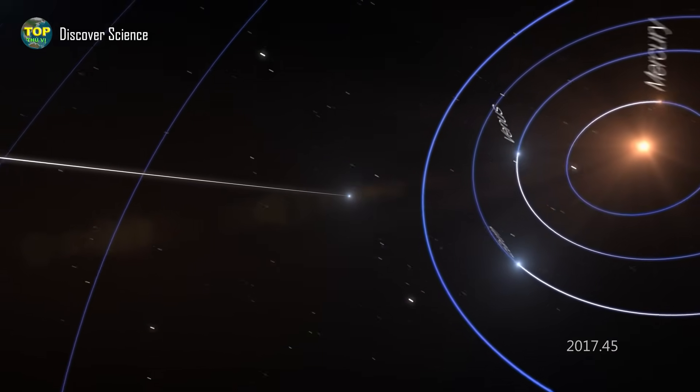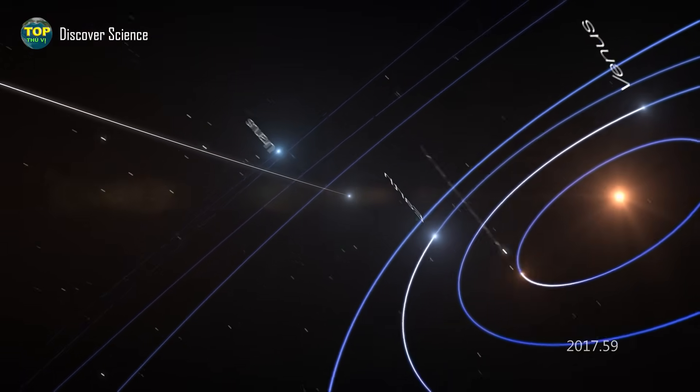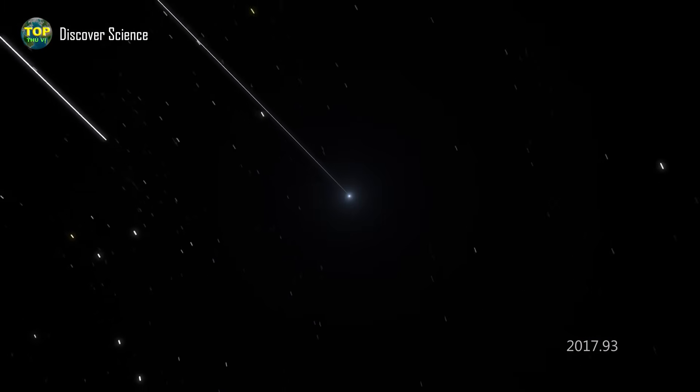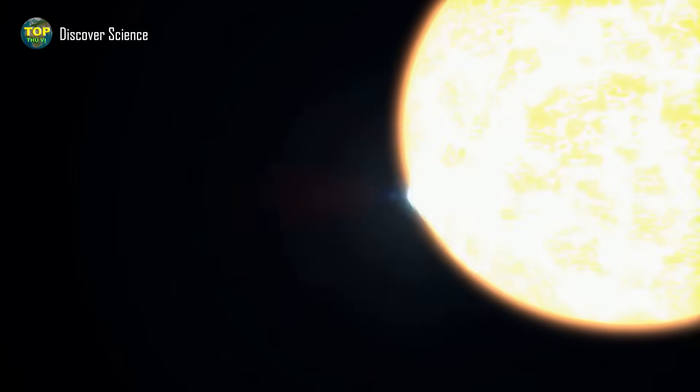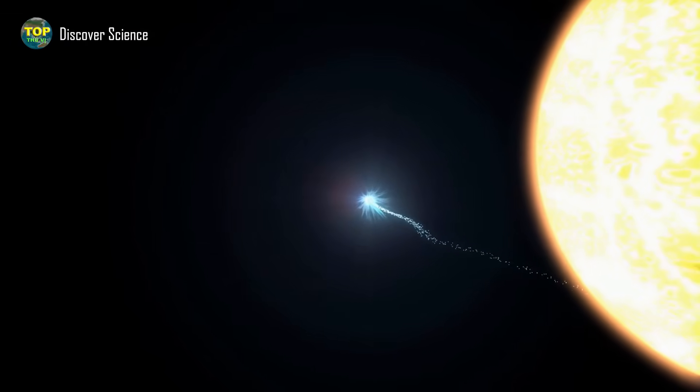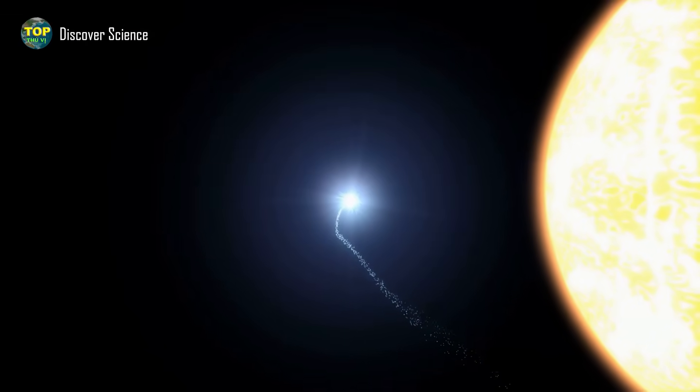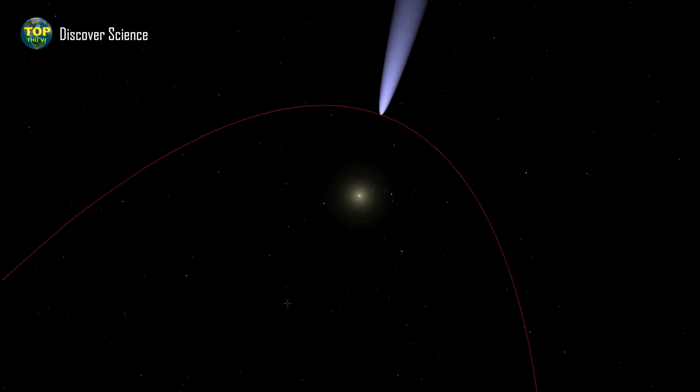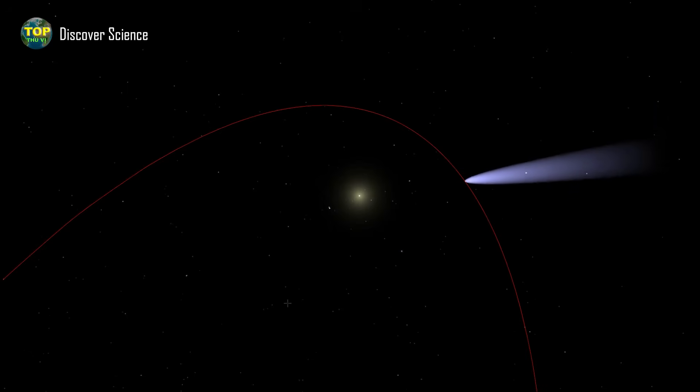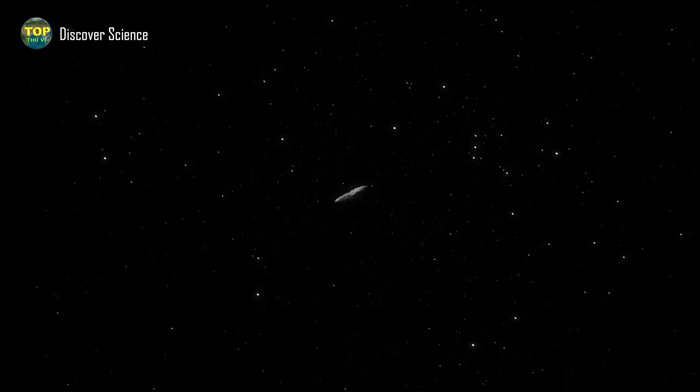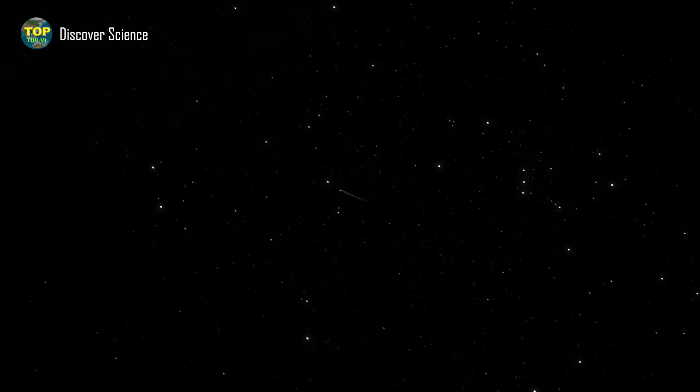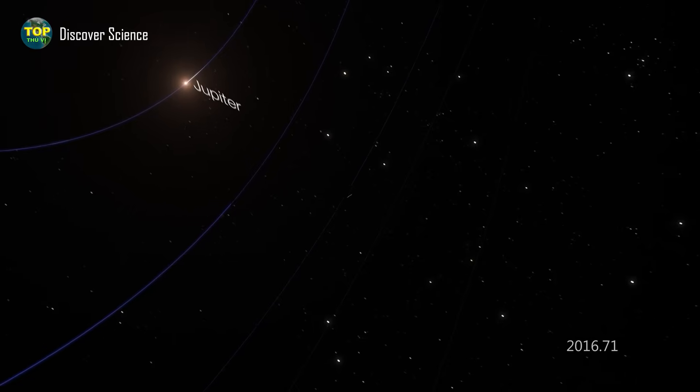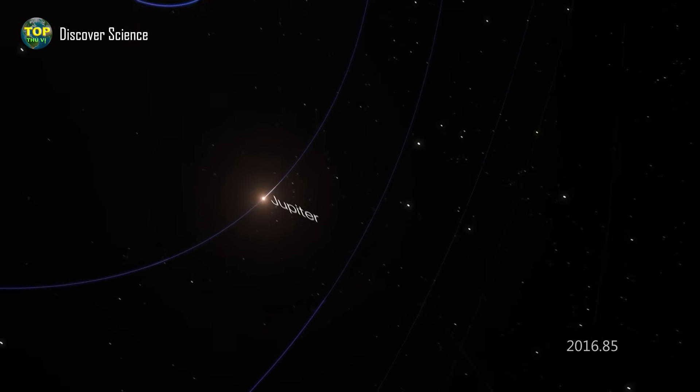But what has astonished scientists and remains the most difficult puzzle to explain about 'Oumuamua is its speed as it accelerated away from the sun. Normally, when an object like an asteroid or comet approaches the sun, it speeds up due to the sun's immense gravitational pull. After passing its closest point to the sun, called perihelion, it begins to slow down as it moves away. But with 'Oumuamua, something strange happened that defied the laws of physics. Instead of slowing down as expected, it slightly accelerated as it moved away from the sun.